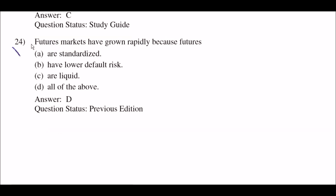Next question: future markets have grown rapidly because futures — option A: are standardized; option B: have lower default risk; option C: are liquid; option D: all of the above. The right answer is option D: all of the above.